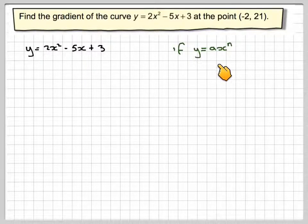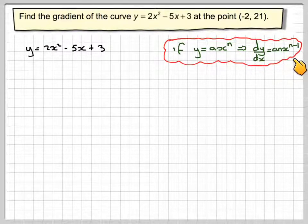If y is equal to ax to the n, then dy by dx is anx to the n minus 1.